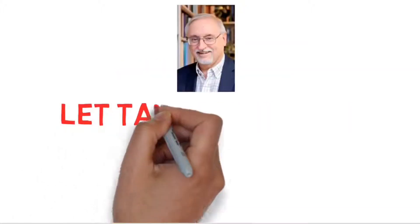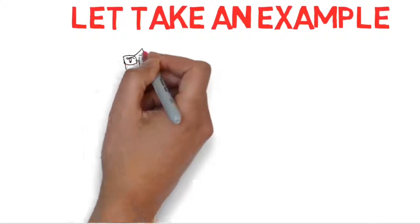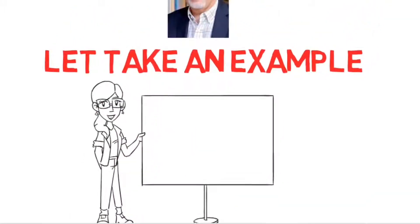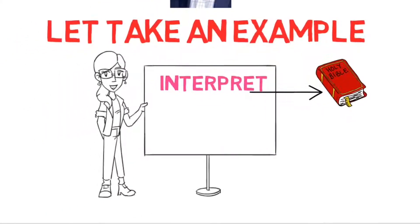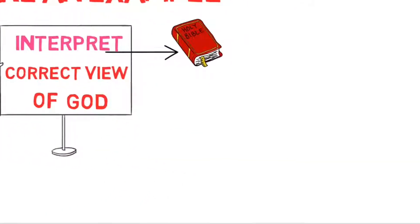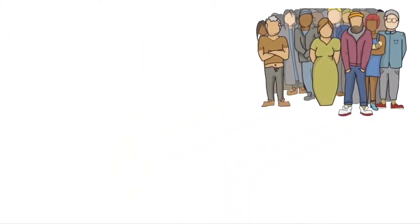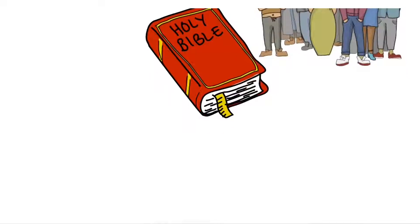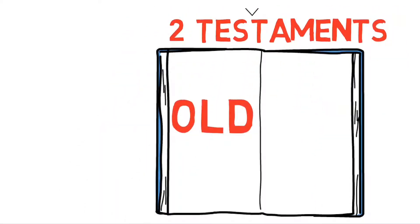Let us take an example of what John Walton has said about Bible, which will equip us to interpret the Bible correctly and help us to get a correct view of God from the Old Testament. We all know that whole Bible is divided into two Testaments, Old Testament and New Testament.